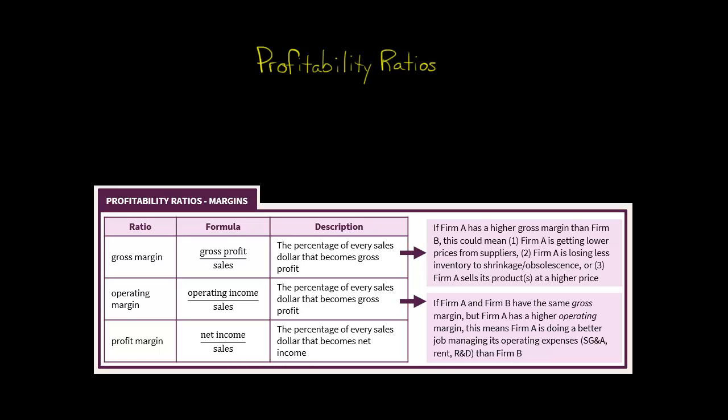There are two categories of profitability ratios: margins and rates of return. Let's start with margins. The most common margins you're likely to see when analyzing financials are the gross margin, the operating margin, and the profit margin.